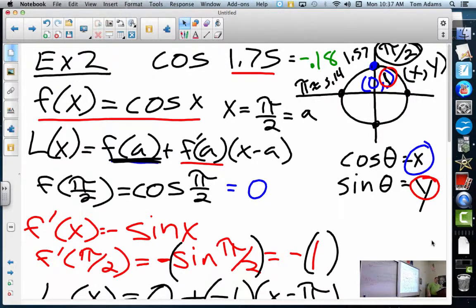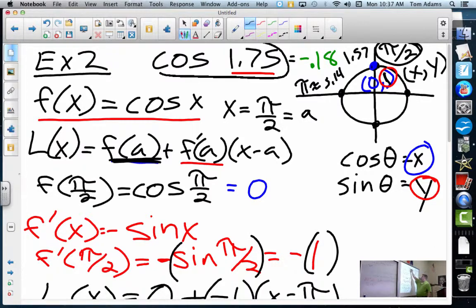That's a great question. The question that she asked, she said, why did you use π/2? So if we go back to the original question, they wanted to know what is cosine of 1.75. Now Mr. Adams knows the unit circle, and on the unit circle, I could do π/2, which is about 1.57, or I could have used π. Which one of those two values is closer to 1.75? π/2.